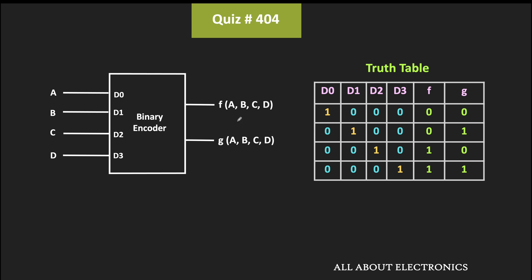As you can see, f and g are the two outputs of this encoder. Whenever the d0 input is high, the output is equal to 0,0. Similarly for d1, the output is equal to 0,1, while for d2 the output is equal to 1,0. And when d3 input is high, its output is equal to 1,1.